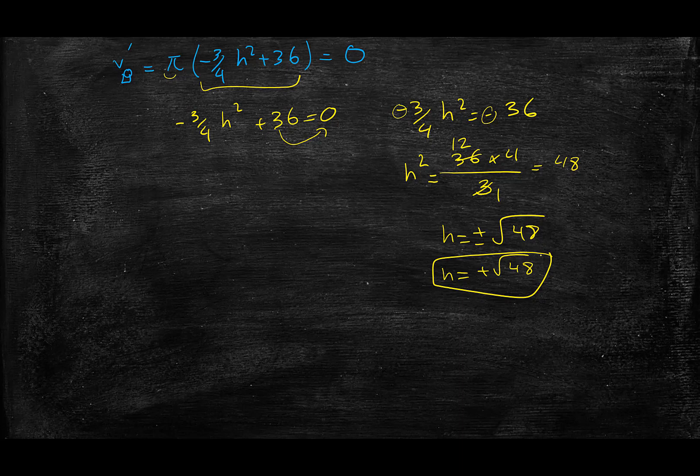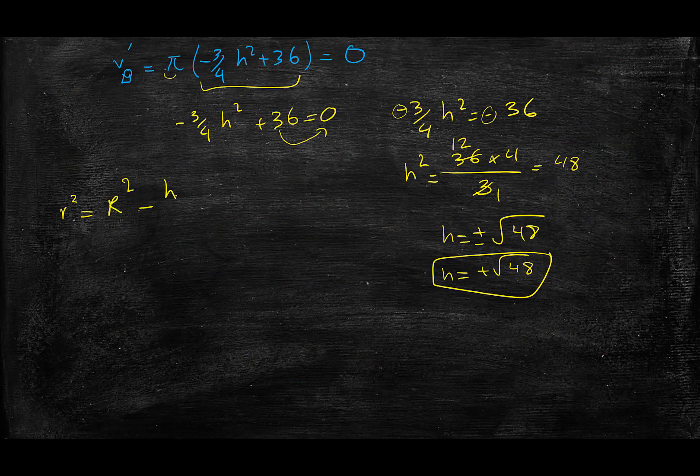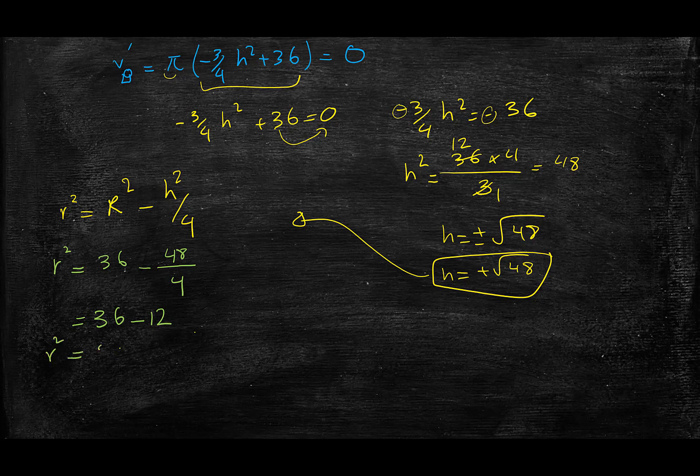Now in order to find r, I'm going to go back to my equation where r² = R² - h²/4. I need to plug in h into this equation and solve for r. So r² = 36 - 48/4. 36 minus 12 equals 24, so r² = 24 and r = √24. I'll just accept the positive, so r = √24.